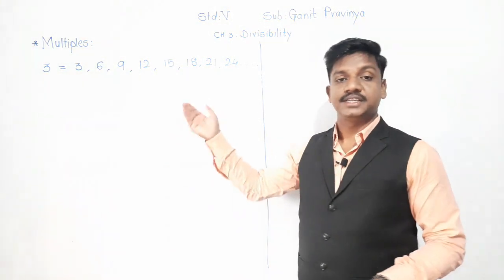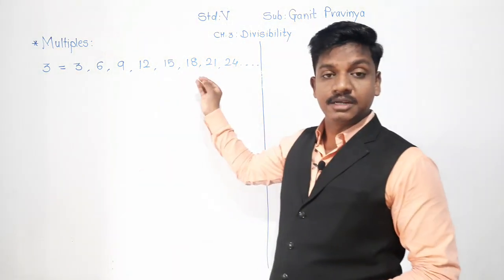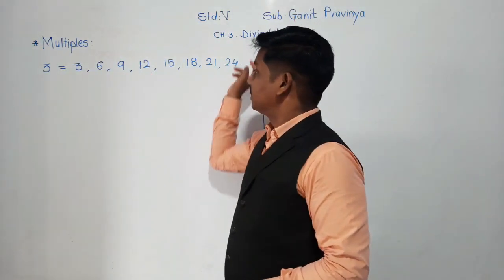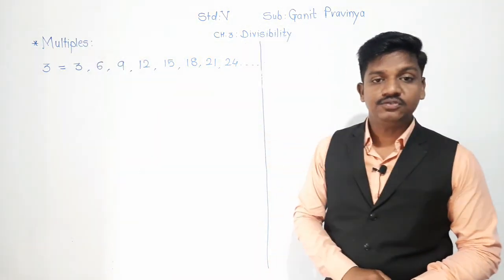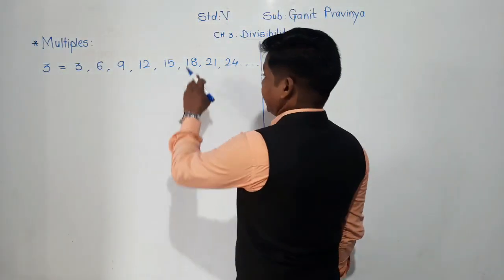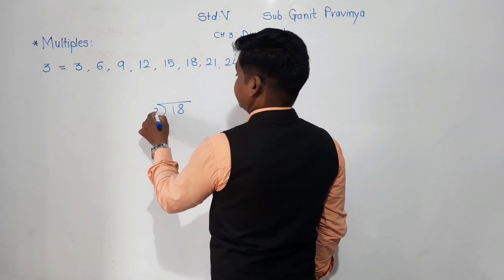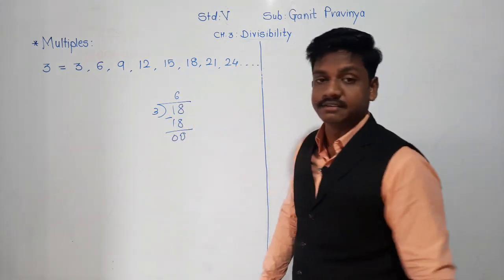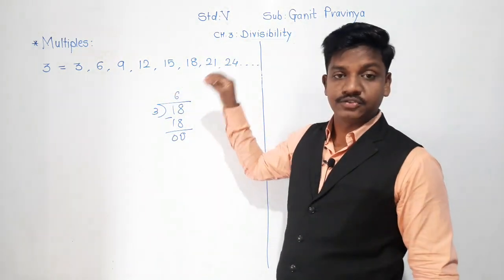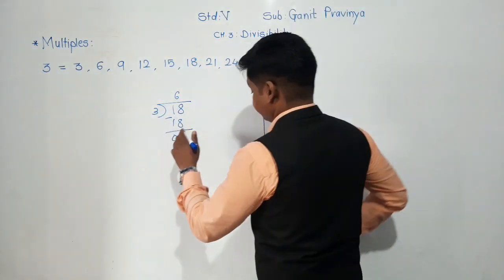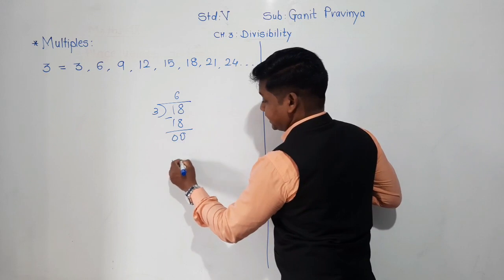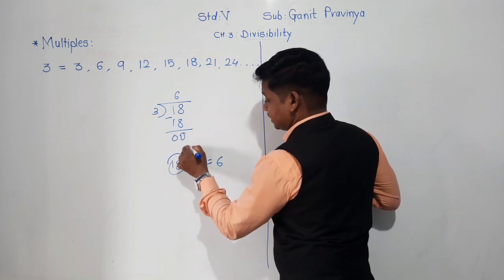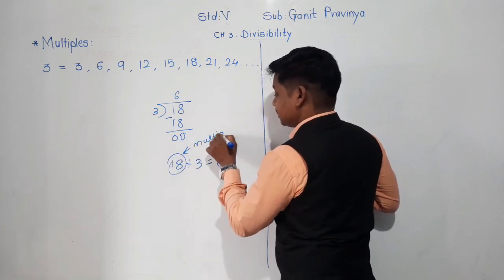For example, 18: if you divide 18 by 3, we get 3 sixes are 18 with remainder 0. So 18 is exactly divisible by 3, meaning 18 is a multiple of 3.